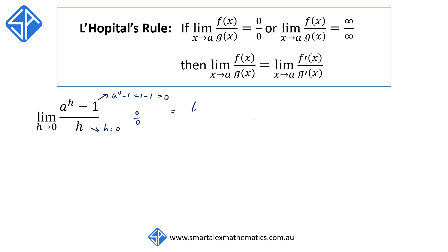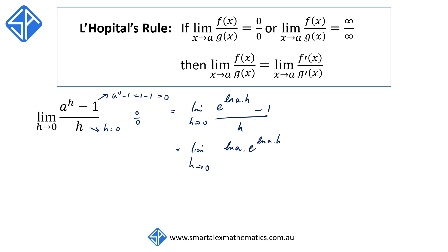We're going to rewrite this limit as the limit as h approaches 0 of e to the (log a times h) minus 1, over h. We now differentiate the top and the bottom with respect to h. Differentiating the top gives us log(a) times e to the (log a times h), and the derivative of 1 is 0. Differentiating the bottom, the derivative of h is simply 1.